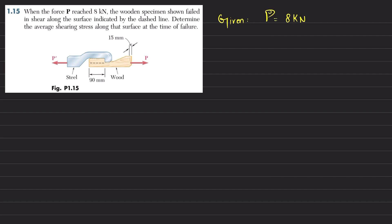And what we have to find is the shearing stress, tau, along the dashed line which caused failure.